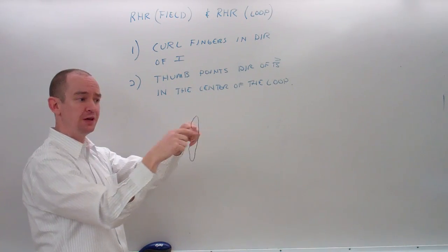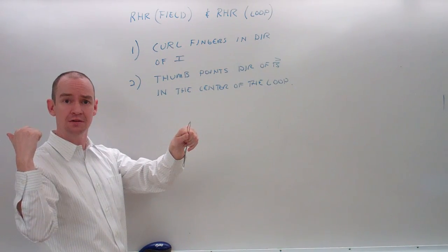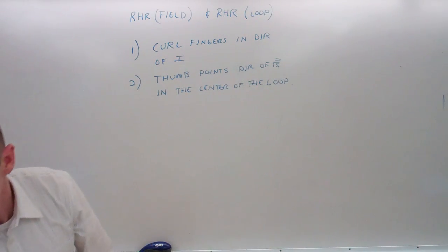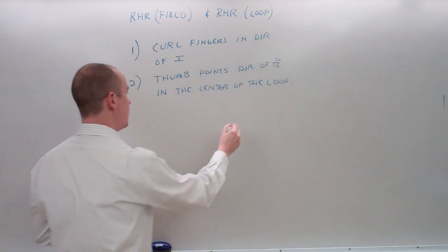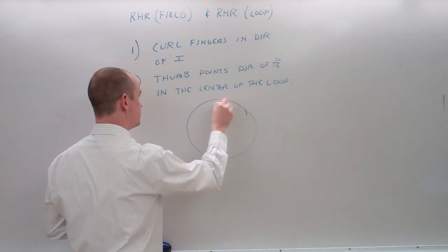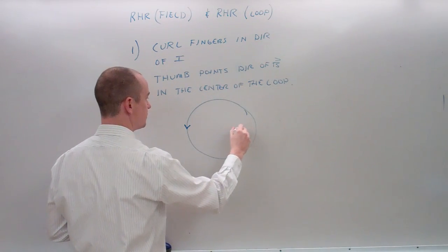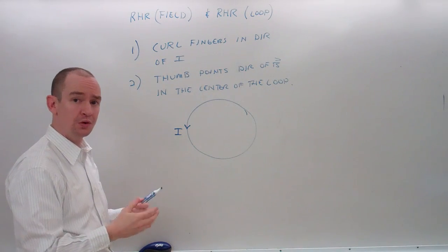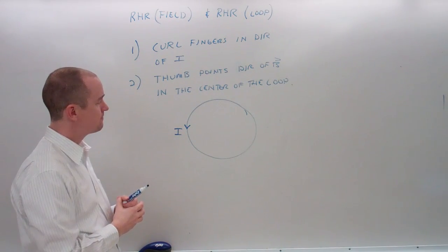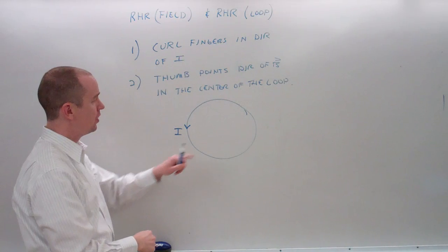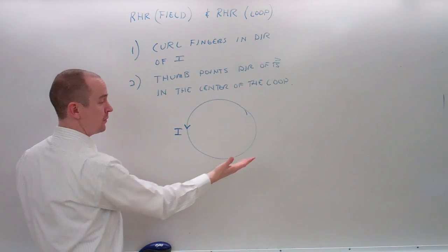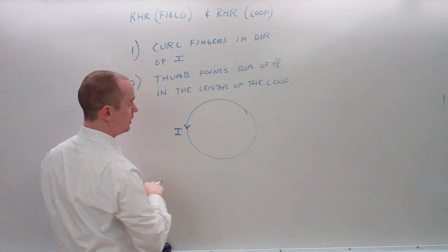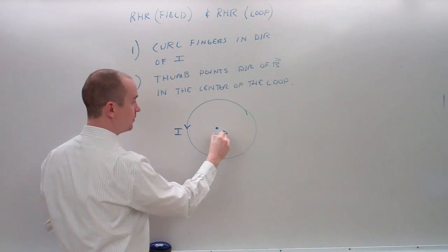In this case, B would be coming to the left. Imagine I have a loop of wire oriented like this, with the current traveling this way. My fingers curl in the direction of I, and my thumb points out. So, in the center of this loop, that must be the direction of B.